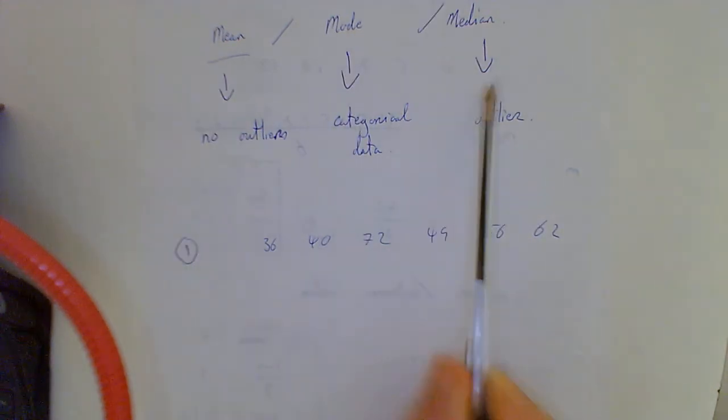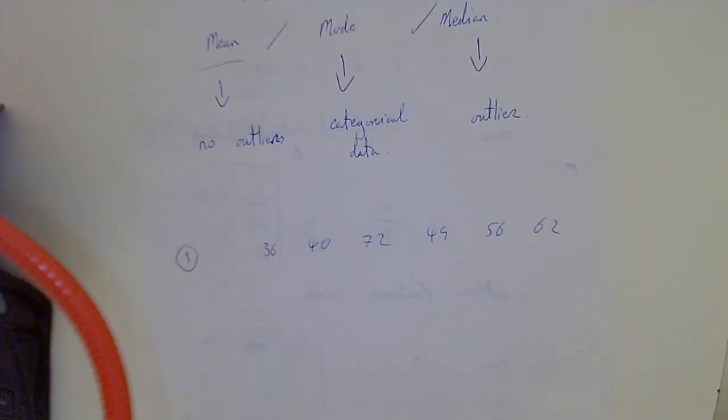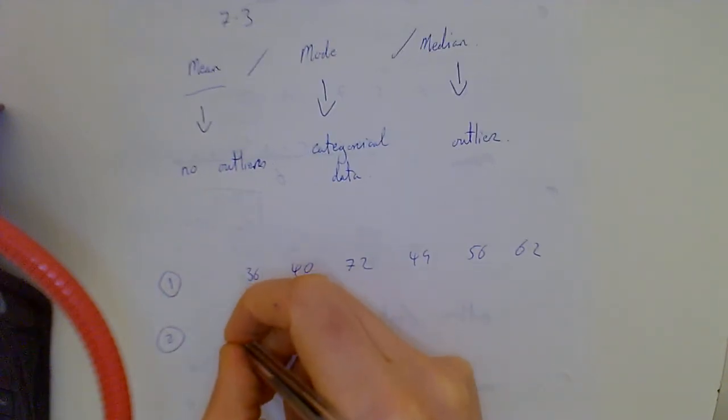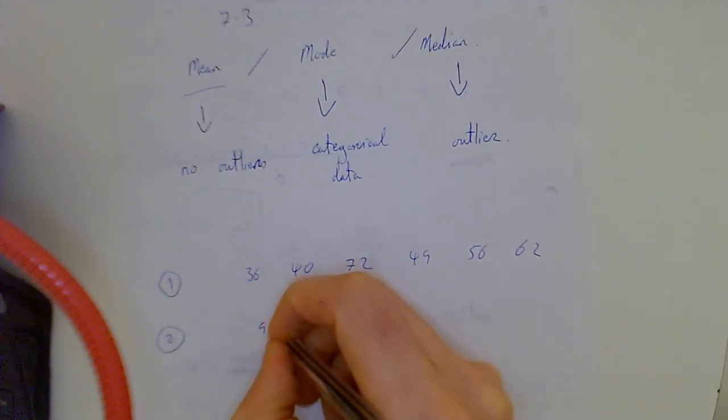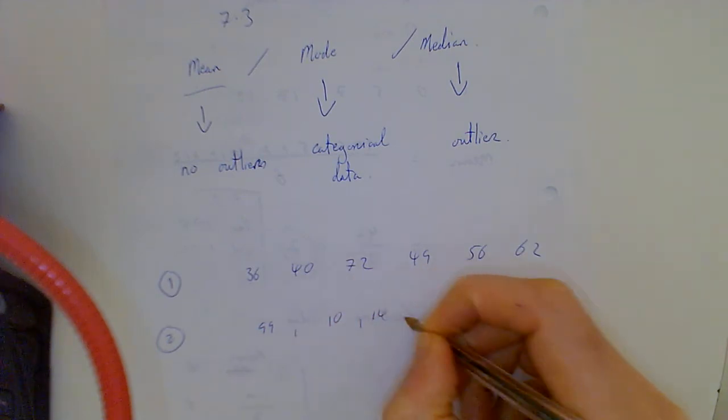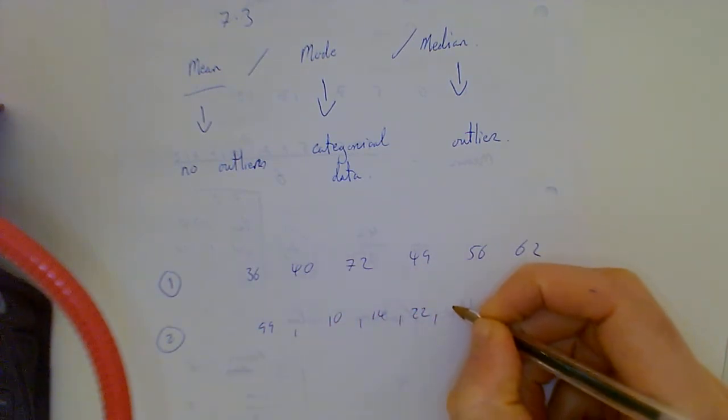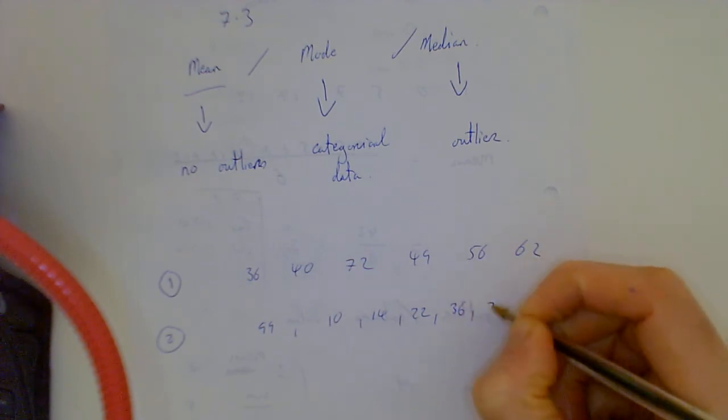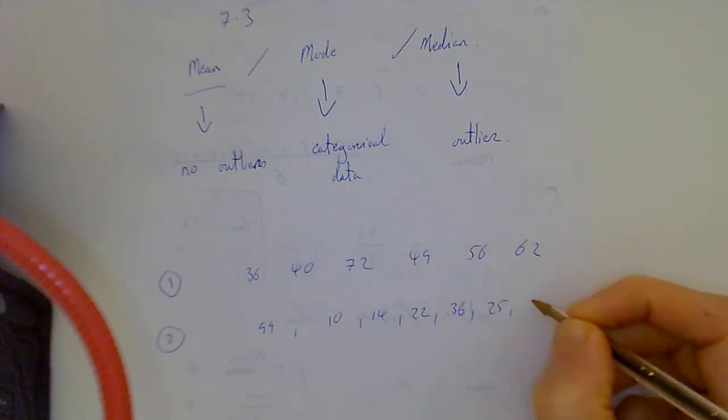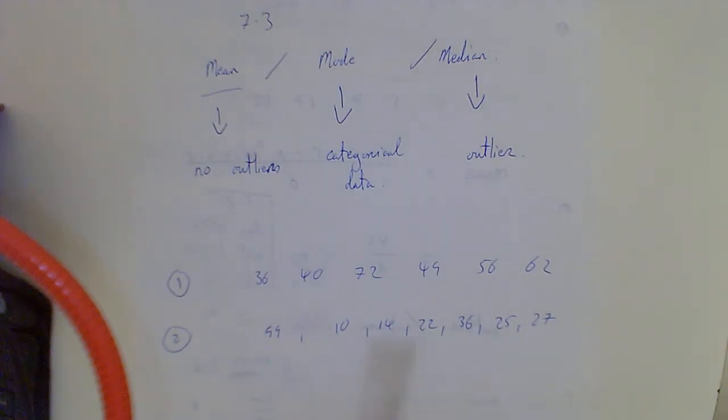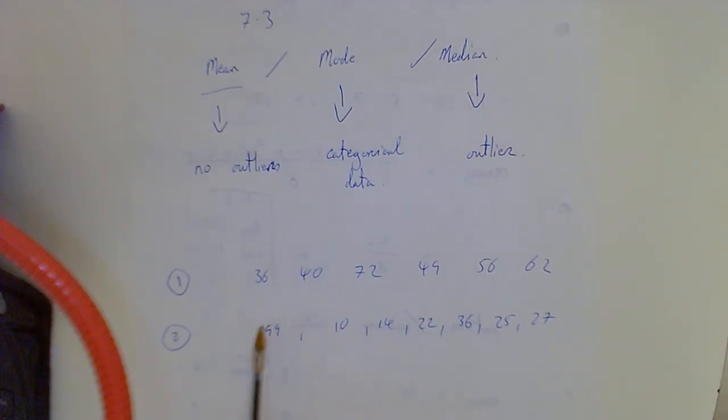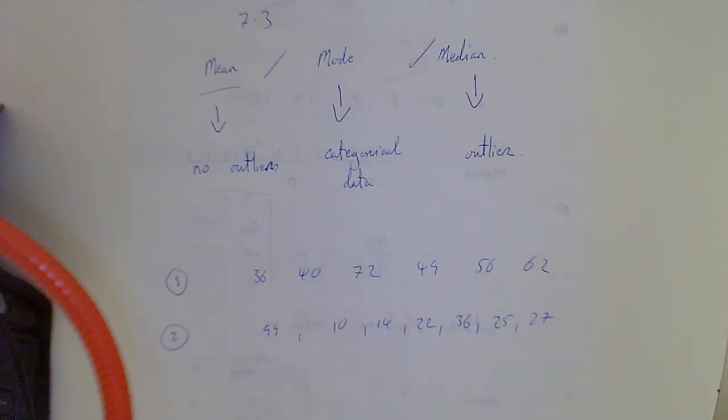So I'm using the mean. Add them all up, do that. This one, if I had 99, 10, 14, 22, 36, 25, 27, I use the median because there is an outlier, the 99. If I had 99 and 98 there, there's two outliers.